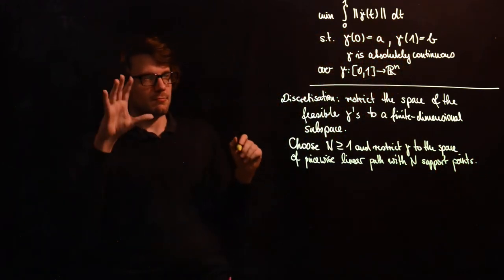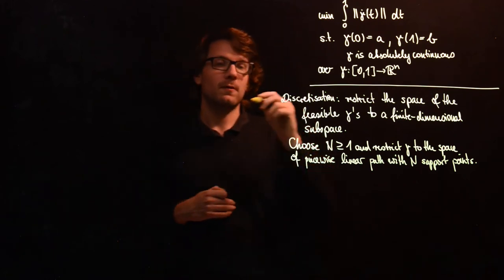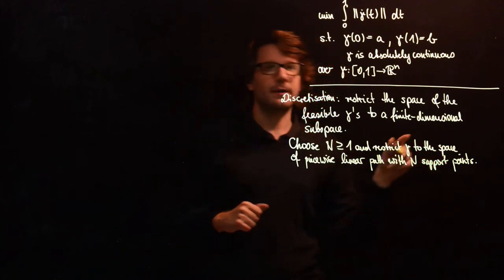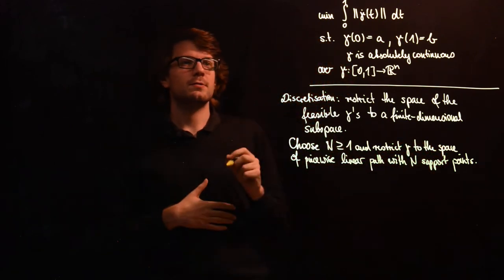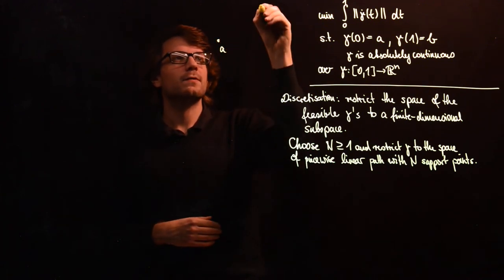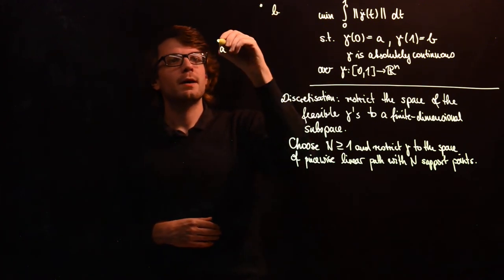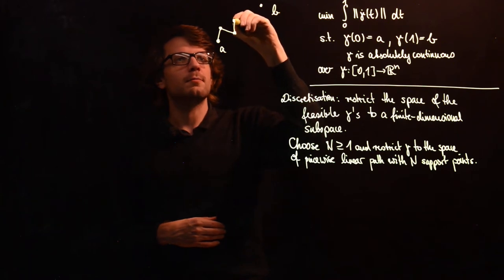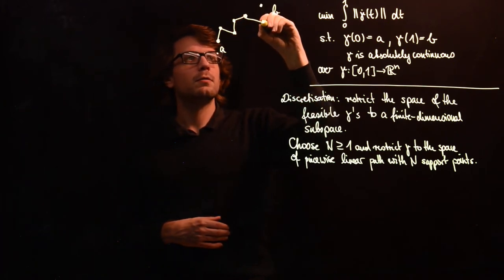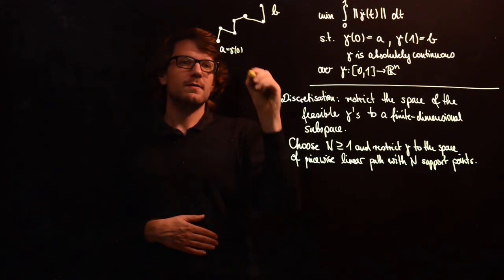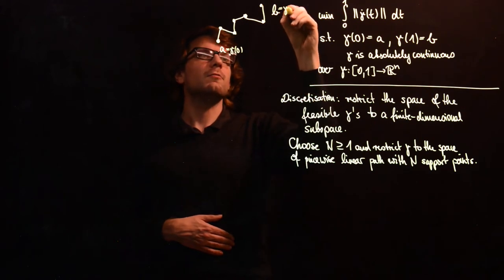Where we say support point for each of the breaking points. It would probably be better to write breaking points right here. So the idea is that you have your points A and B, and now you're going to take only those paths which have this form.